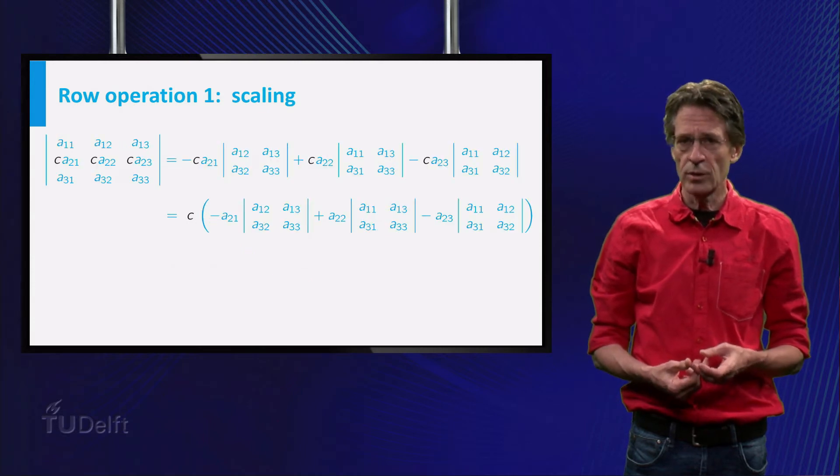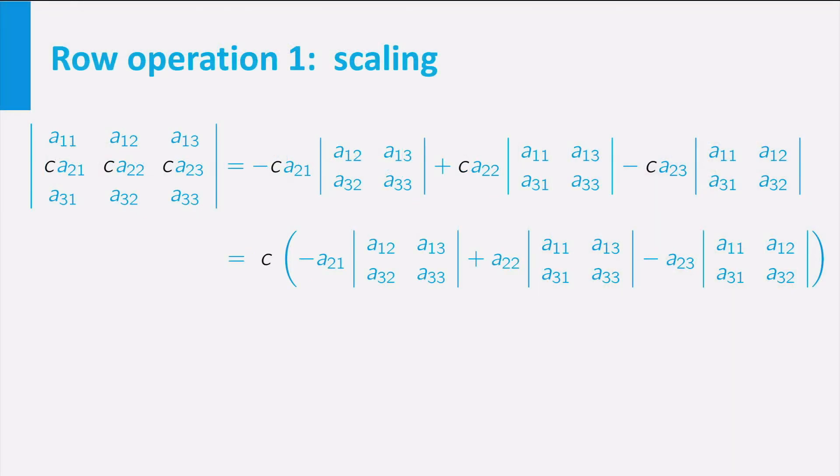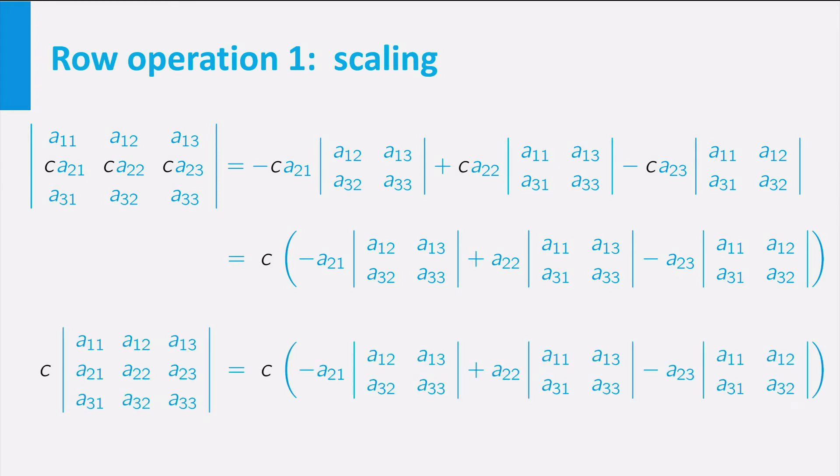For a general matrix the rule is proved by expanding across the row with the scaling factor c, which is illustrated on the slide for the case of a 3x3 matrix. Here the second row has a scaling factor c. If you expand across the second row, in two steps you see that the scaling factor c can be taken to the front. So the total effect is a factor c to the determinant.